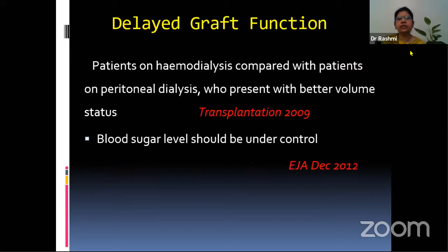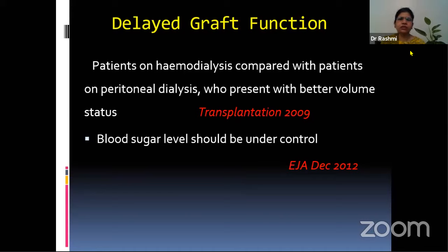Patients on hemodialysis are hypovolemic and volume-contracted, as compared to patients on peritoneal dialysis who present with better volume status. Blood sugar levels should be meticulously controlled, as they can also affect graft function during reperfusion. Insulin should be given perioperatively if the sugar levels go above 180, although I try to give insulin only when it is above 200 mg percent, because one has to also watch against hypoglycemia.